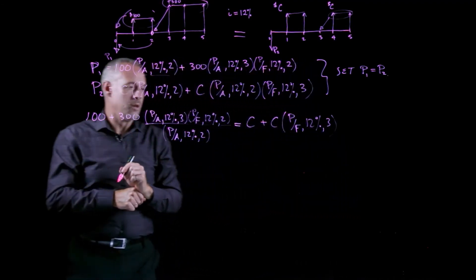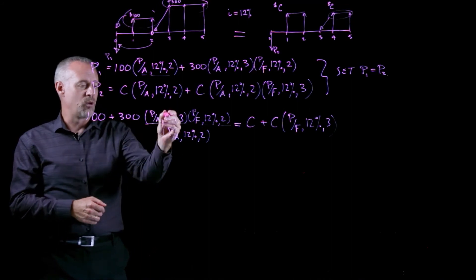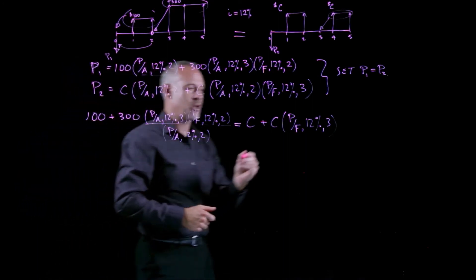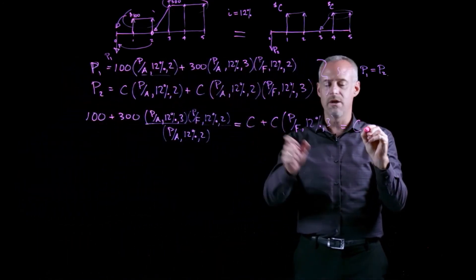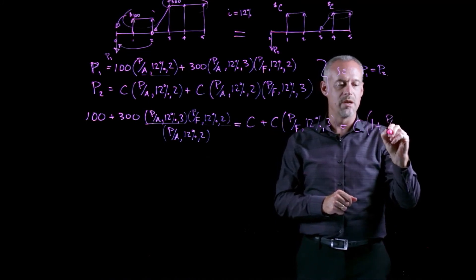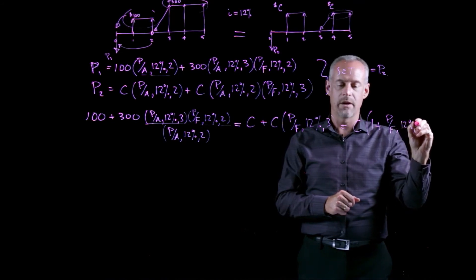At this point, it may be advantageous to sort of figure out what some of these factors are. There's not too much more simplification I could do. Well, I could actually just bring the C out here and say that this is the same as 1 plus P given F, 12% and 3.